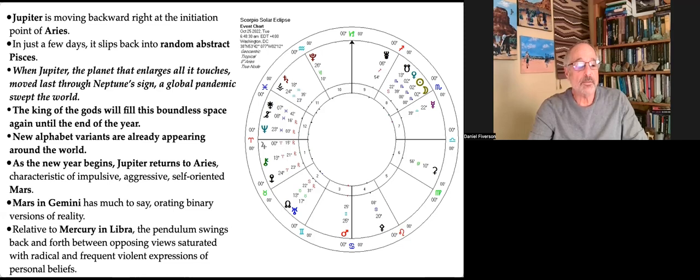Mars in Gemini has much to say, orating binary versions of reality. Relative to Mercury in Libra, the pendulum swings back and forth between opposing views, saturated with radical and frequent violent expressions of personal beliefs.